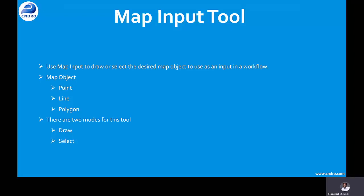We have basically three map objects which make up our spatial data: we either have a point, a line, or a polygon. Points make up a line — at least two points make up a line — and then more than two points makes up a polygon. So a single point makes a point, and at least two points makes up a line.